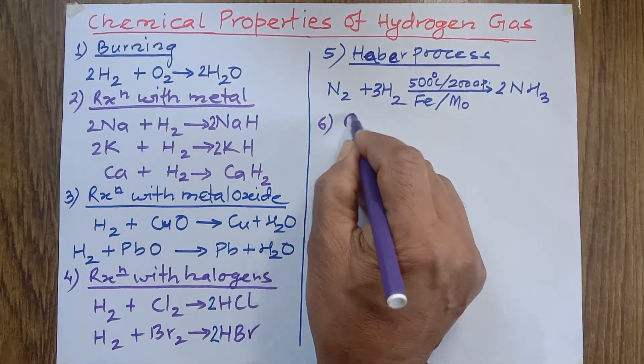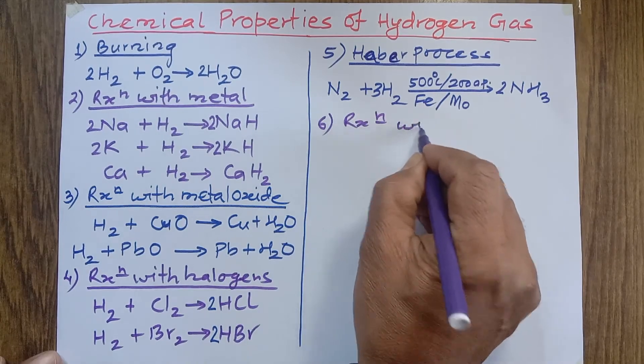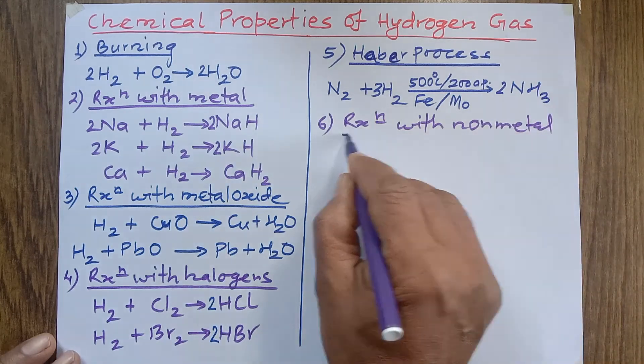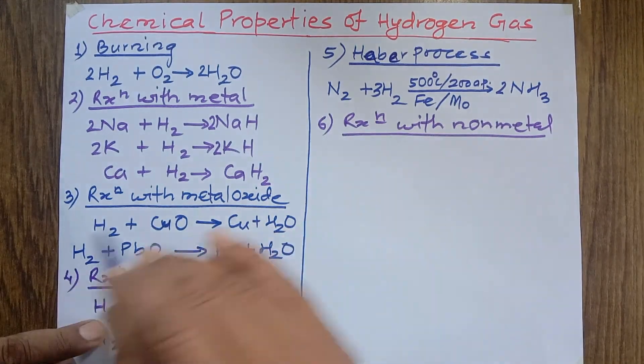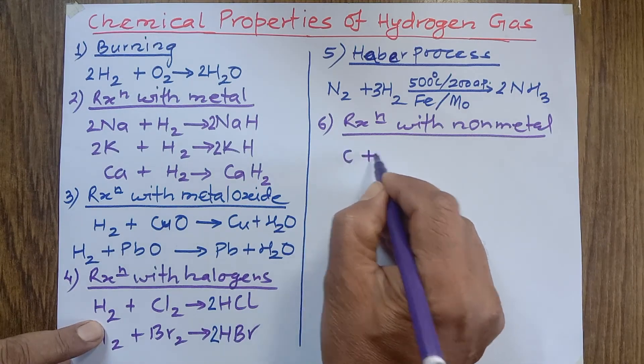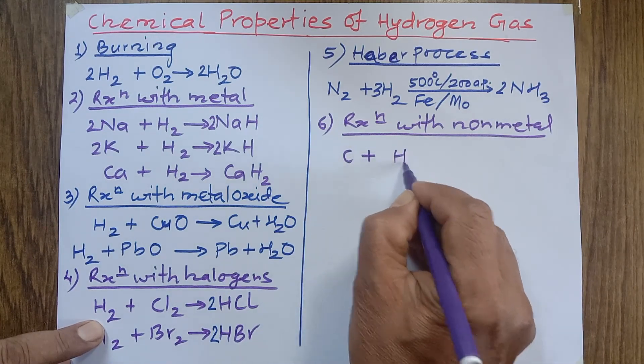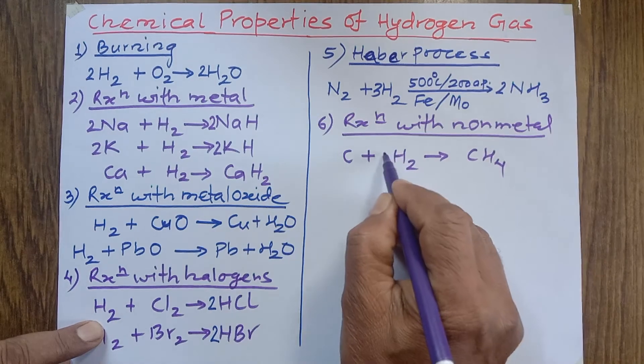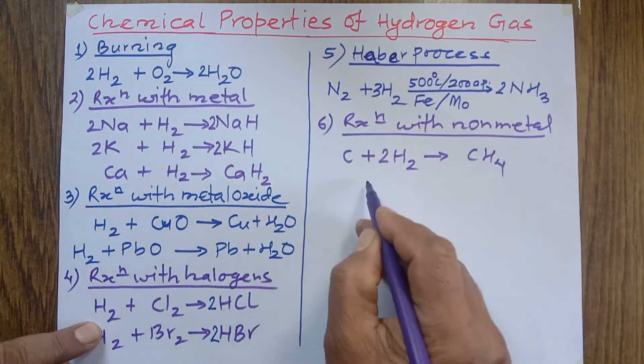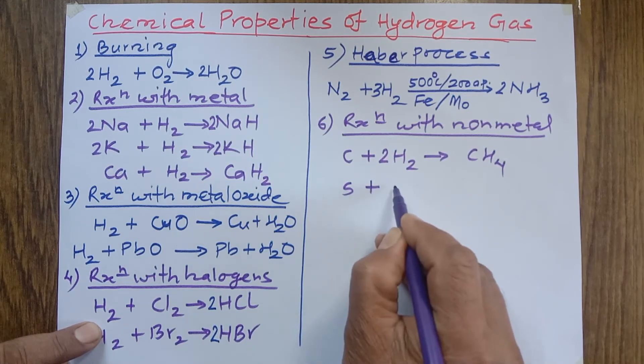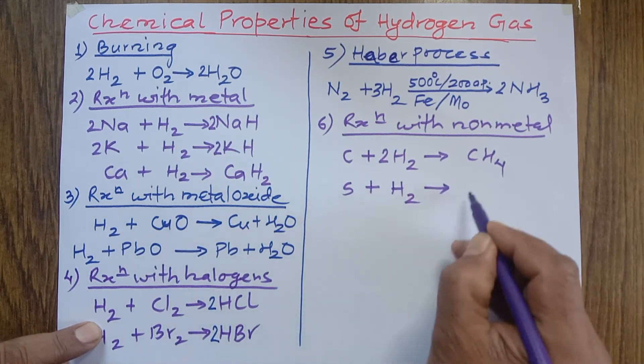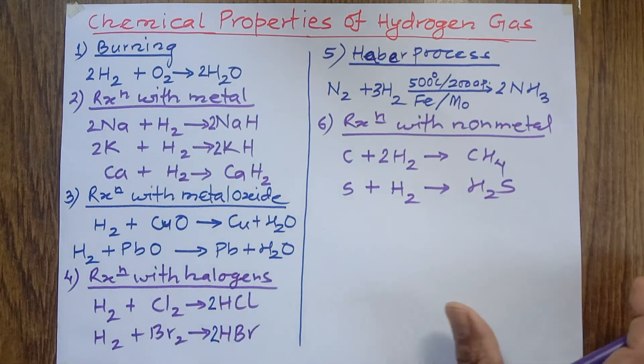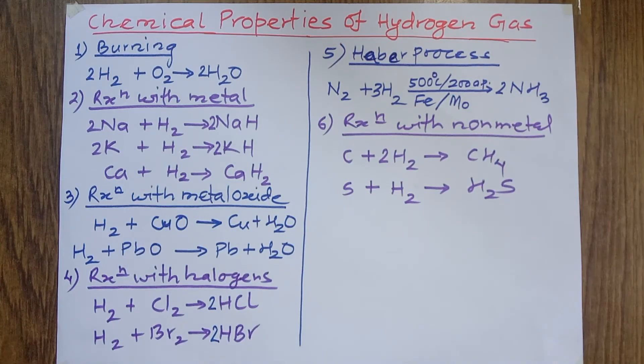Number six, reaction with non-metal. It reacts with non-metals at high temperature. Carbon is non-metal. When it reacts with hydrogen at very high temperature, then it forms methane: C + 2H2 → CH4. In the same way, sulfur also reacts with hydrogen at very high temperature to form hydrogen sulfide gas: S + H2 → H2S. These are some important chemical properties of hydrogen.